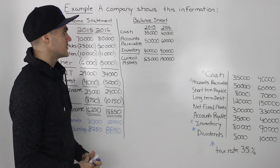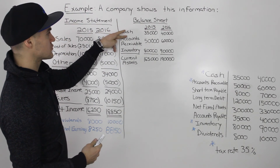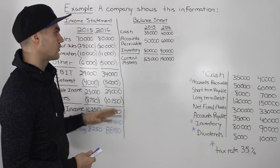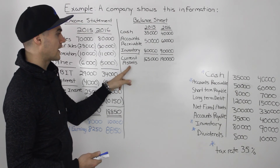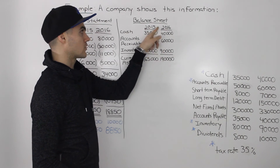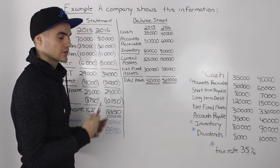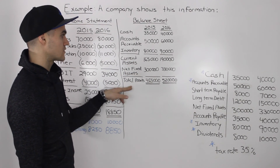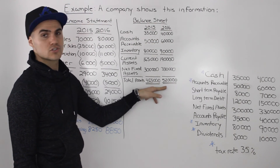Next, let's get into making the balance sheet. The first thing you want to do is organize the current asset section. We have cash, accounts receivable, and inventory — those figures were given in the original example. Those are all current assets, so we list them for both 2015 and 2016, getting total current assets of $165,000 for 2015 and $190,000 for 2016. After current assets, we have net fixed assets, which are long-term assets. Adding current assets to net fixed assets gives total assets of $465,000 for 2015 and $520,000 for 2016.